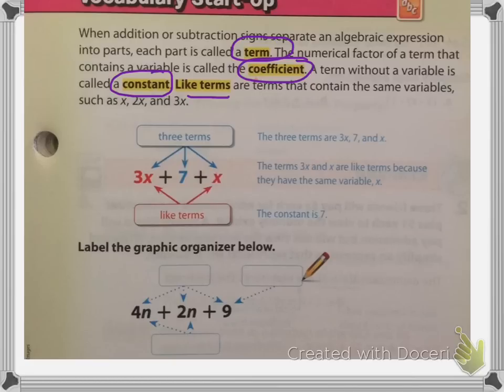We've already talked a little bit about this in our last section when I explained that you could not combine 8x plus 8. So that's what like terms is talking about. Let's go ahead and take a look at the example. They've got 3x plus 7 plus x. So you have three different terms: 3x, 7, and x. 3x and x are called like terms, and they can be combined.